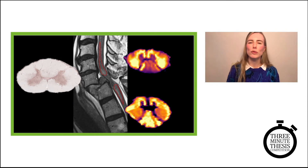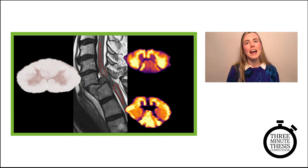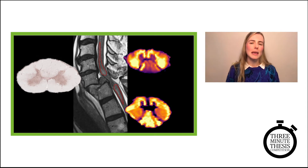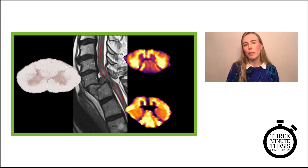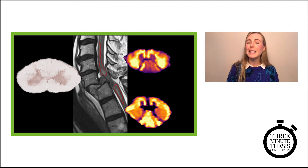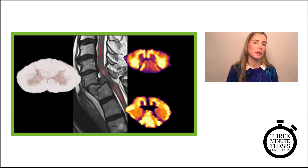Myelin is gradually lost after a spinal cord injury as the tissue breaks down, and this can contribute to disability. If we could image this myelin loss in the cord over time, it would be very valuable for clinical trials to track whether new treatments for spinal cord injury are working, and it might help us to predict what level of recovery is possible for individual patients.